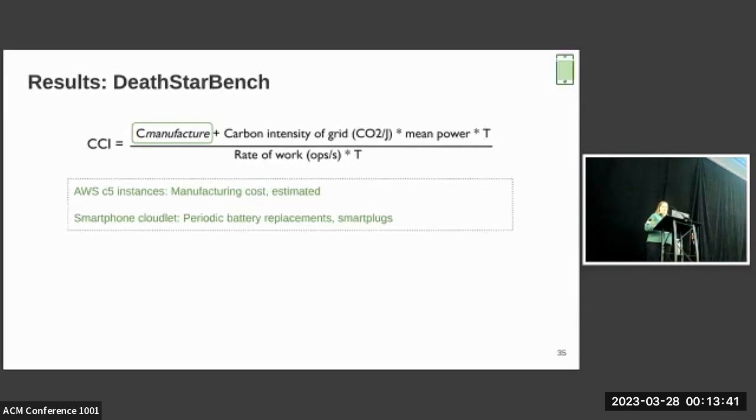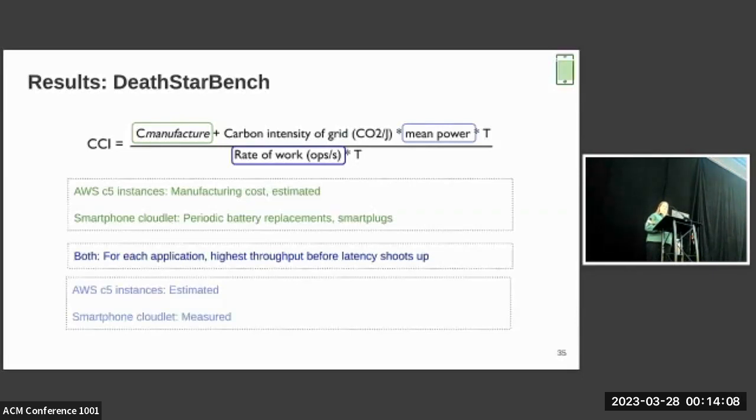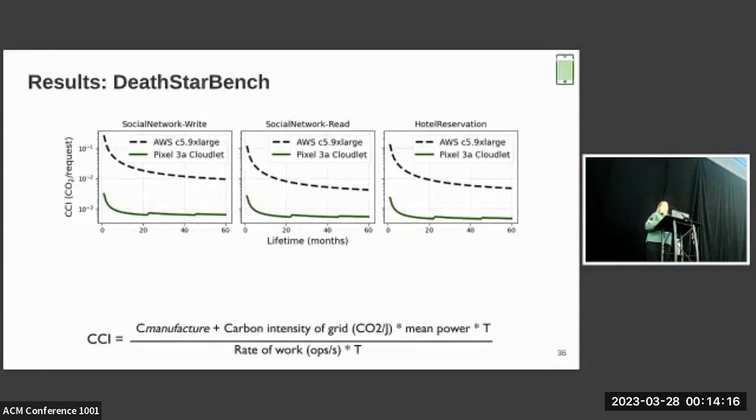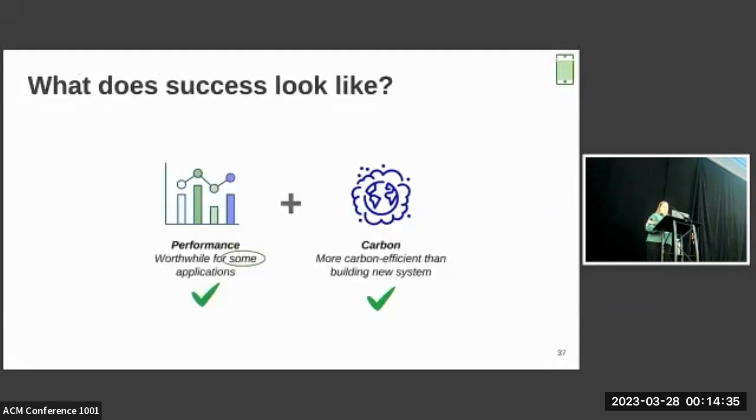I'm going to put our formula back up here. For the AWS C5 instances, it's impossible to get a direct number for how much carbon they take to manufacture since AWS isn't publishing that. However, we went with a third-party estimate. For the smartphone cloudlet, we again consider that the smartphones themselves take zero carbon to manufacture since we're repurposing them, but we do take into account the cost of periodic battery replacements and smart plugs to allow us to toggle power on and off to the devices. For each application, we take the highest throughput before latency shoots up on that graph that I just showed as our rate of work. And we get the mean power for the smartphone cloudlet from benchmarking and for AWS, from estimate. The results show that across the three applications and workloads studied, the carbon efficiency of the phone-based cluster is about 10x that of the AWS alternative. And for the applications that the phones do a little bit better on, for instance, social network write, it's even less carbon intense, but overall still better than the AWS alternative. So we've shown carbon efficiency.